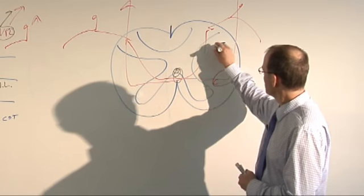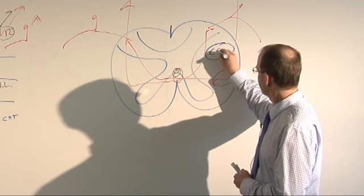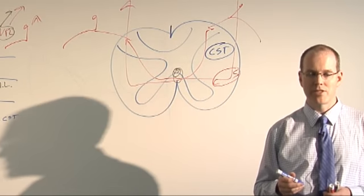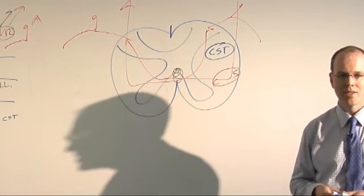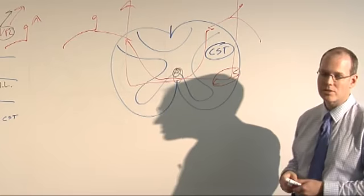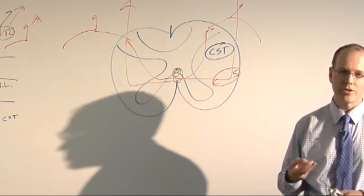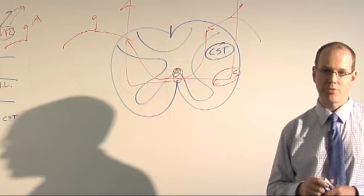The upper motor neuron pathways are also involved. So the corticospinal tract here is involved also. So there are some upper motor neuron manifestations. This may not be very dramatic, but you might have some brisk leg reflexes, maybe a Babinski sign. And the third manifestation we see commonly is peripheral neuropathy.